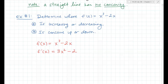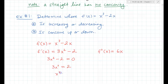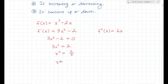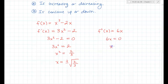Now let's take the second derivative. f double prime of x: 3x² becomes 6x, and minus 2 becomes 0. So the second derivative is 6x. Now let's find the critical numbers for the first derivative: 3x² - 2 = 0, so 3x² = 2, x² = 2/3, and x = ±√(2/3).